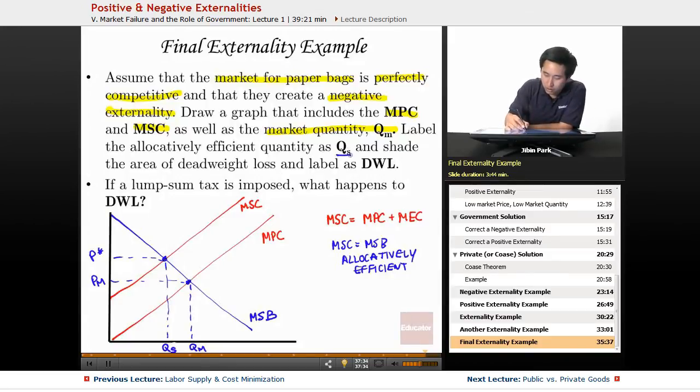This problem wants you to use Qs. If you're producing this much and the allocatively efficient point is this much, then the deadweight loss is naturally going to be this triangular area that you see right here. This is referred to as the DWL.